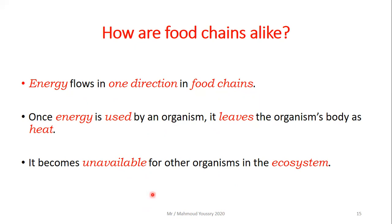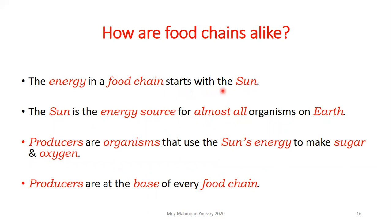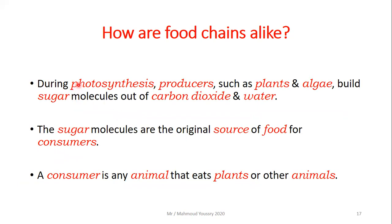Like when you eat food, you use the energy from it — once used up, it leaves your body as heat. The energy in a food chain starts with the sun, because the sun is the energy source for almost all organisms on Earth. Producers are organisms that use the sun's energy to make sugar and oxygen through photosynthesis. Producers are at the base of every food chain because they are the only organisms that can use sunlight to make their own food.